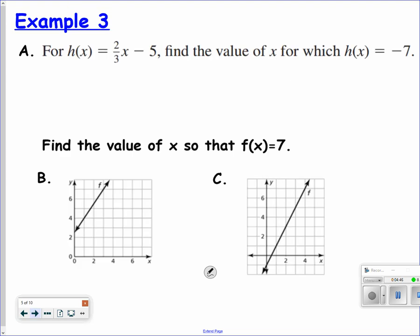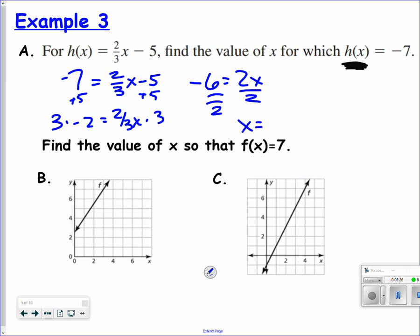For h of x equals 2 thirds x minus 5, find the value of x for which h of x equals negative 7. Notice they're giving me h of x. They're not asking me when x equals. They're giving me the actual h of x. So what they wanted me to do here is plug negative 7 in for h of x and solve it. It's looking at everything backwards. It's not asking you to put a number in for x. It's asking you to put a number in for h of x. So add 5, multiply both sides by 3, and divide by 2.